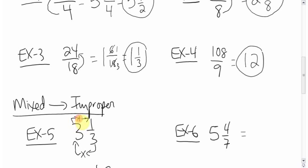3 times 3 is 9, plus 1, 10, 10 over, keep the denominator, like we did before, of 3. That's it. Check to reduce. You can't reduce with these two, we're done.